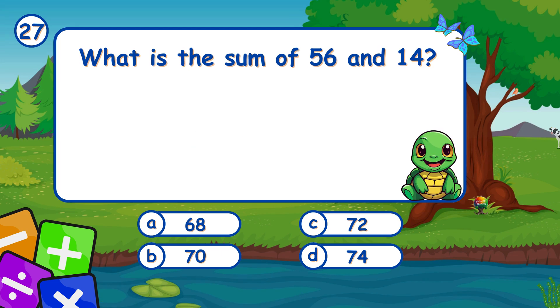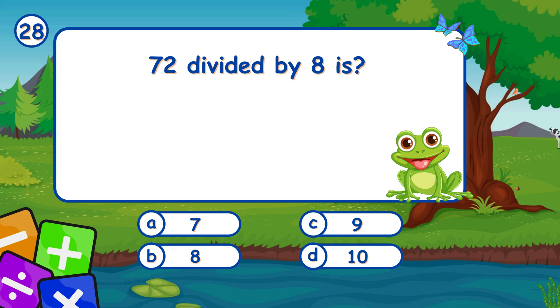What is the sum of 56 and 14? It's B, 70. Adding 56 and 14 gives 70. 72 divided by 8 is... It's C, 9. 72 divided by 8 is 9.